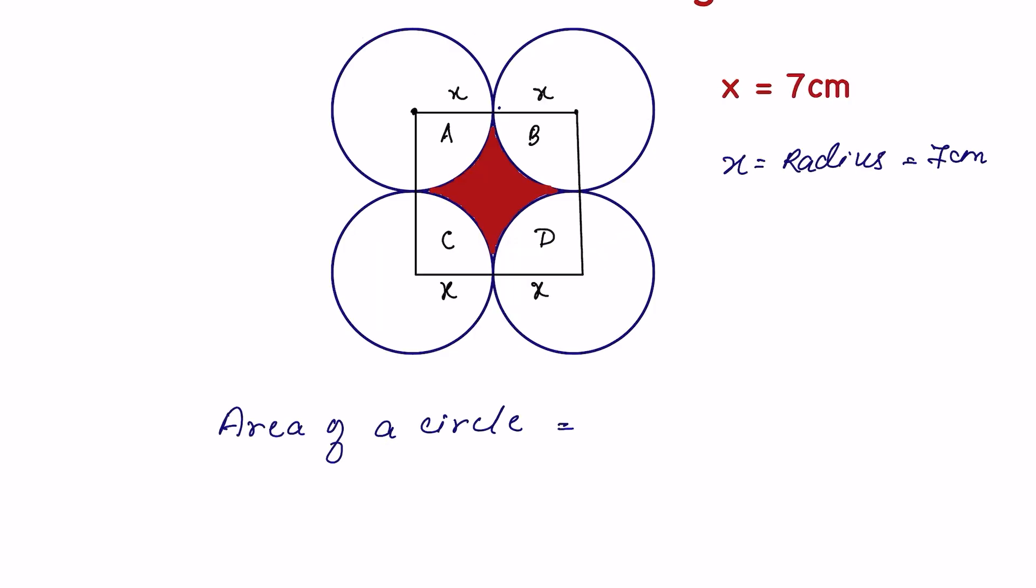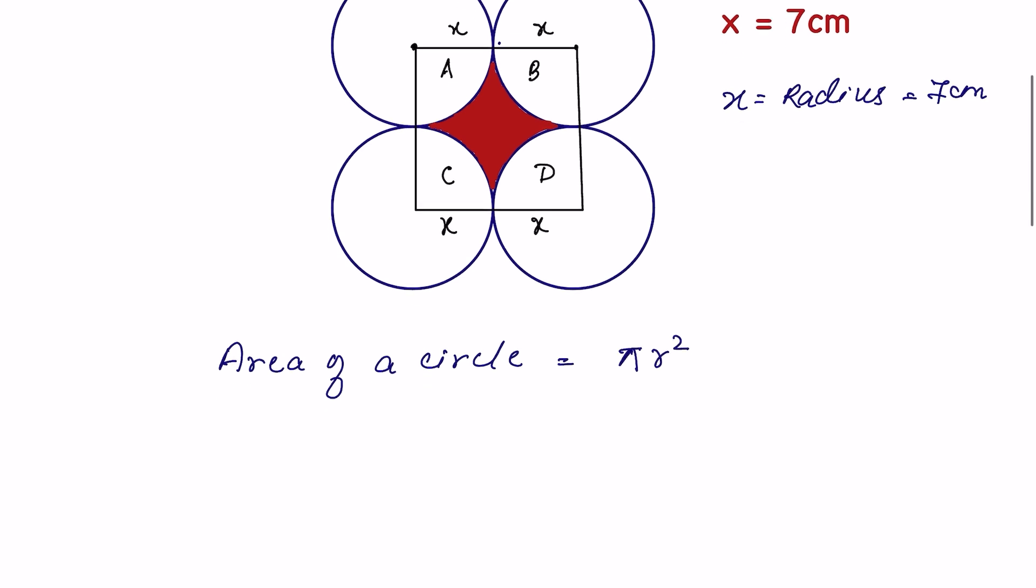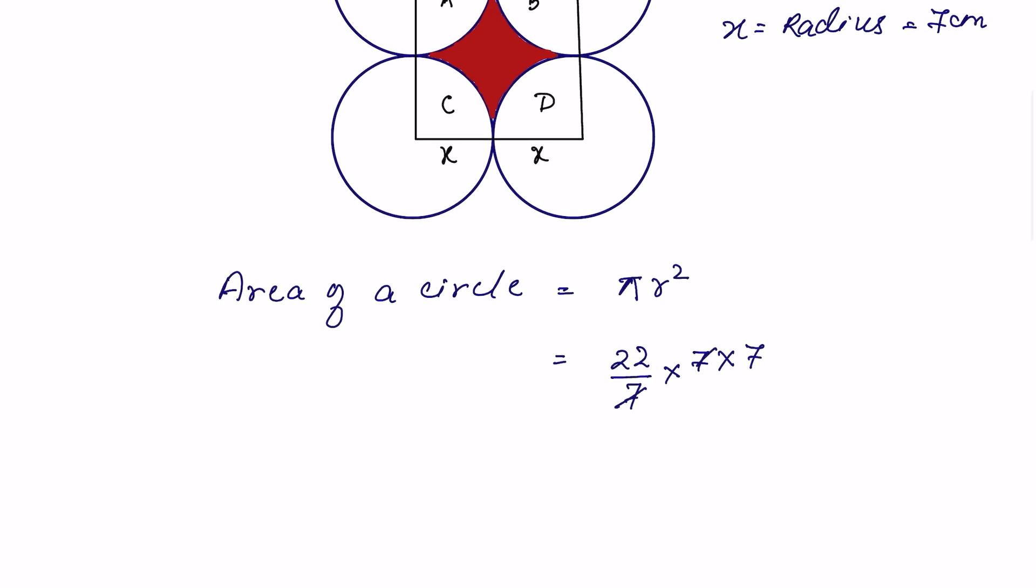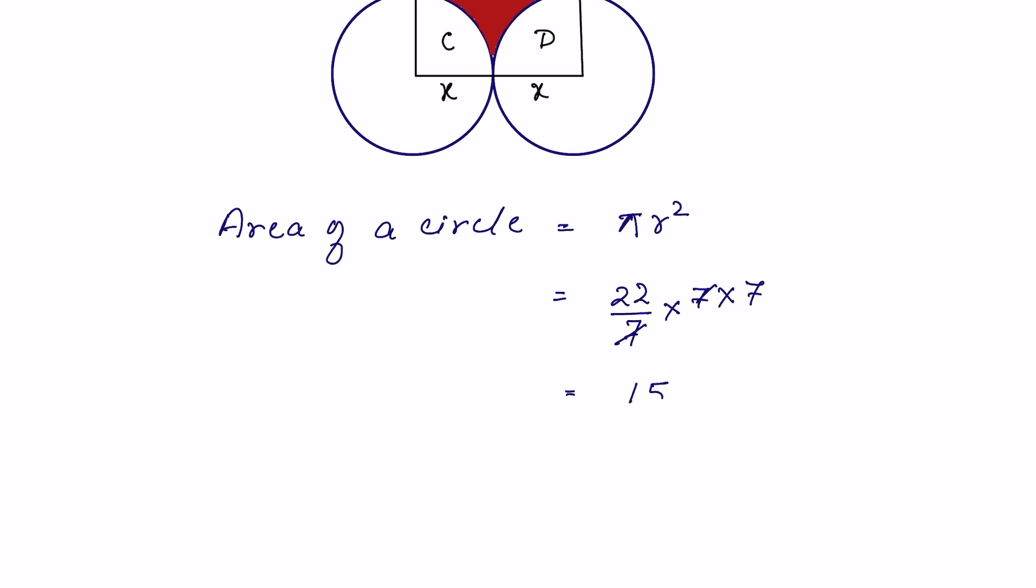First understand that area of a circle is equal to πr². So area of circle here will be π is 22 upon 7 times 7 times 7. This 7 and 7 gets cancelled, so it is equal to 154 cm². So this is the area of the circle.